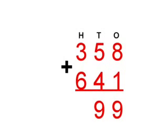Next we add the numbers in the hundreds column which is 3 plus 6, and that equals 9. So 358 plus 641 equals 999.